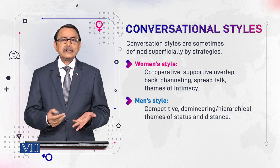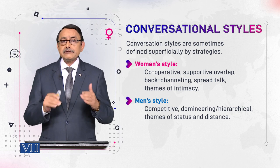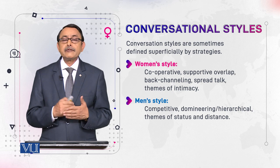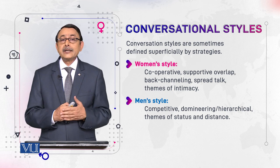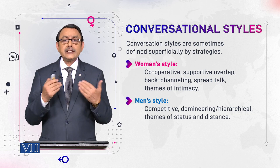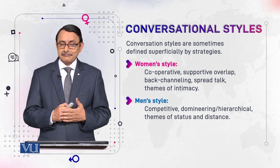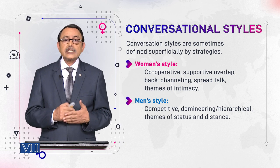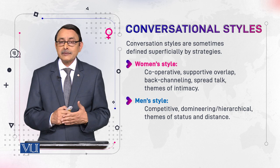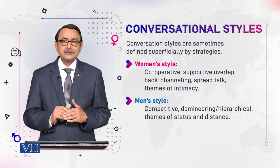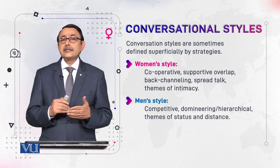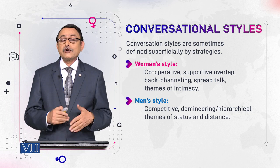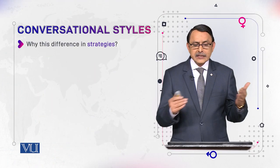Now, men's style — what are their strategies? They are competitive. As we said in the previous module, they compete for the floor, which shows their desire for power. They are hegemonic and hierarchical. They want to show that they are more powerful than others because they dominate the talk. Their topics also show their status and their distance from their audience.